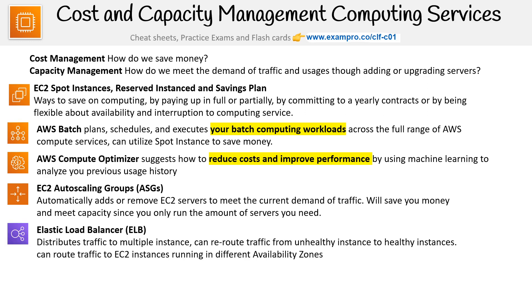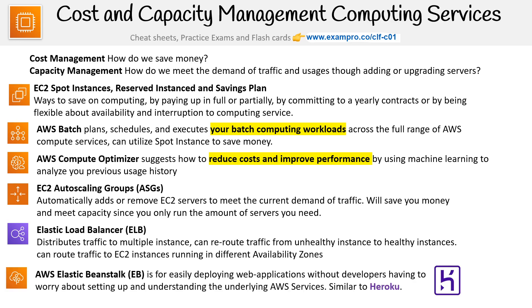Then we have ELB — Elastic Load Balancer — which distributes traffic to multiple instances, can reroute traffic from unhealthy instances to healthy instances, and can route traffic to EC2 instances running in different availability zones. We also have Elastic Beanstalk, which makes it easy for deploying web applications without developers having to worry about setting up the underlying AWS services — similar to Heroku, it's a platform as a service. Not all of these are about costs; some, like ELB, are about capacity management.